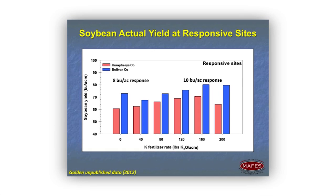This figure looks slightly different from the Arkansas figure simply because we don't have the mass of data points. To get a good correlation for soil testing it takes about 35 to 40 individual sites. From the two responsive trials, the red site was on a farm in Humphreys County and the blue site was in Bolivar County. We observed an 8-bushel yield response in Humphreys County and a 10-bushel yield response in Bolivar County, both topping out around 120 pounds of K₂O per acre.